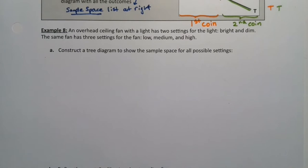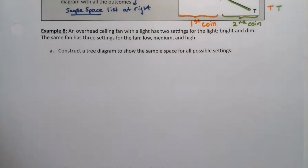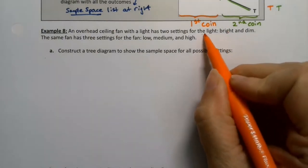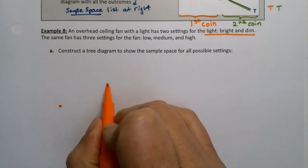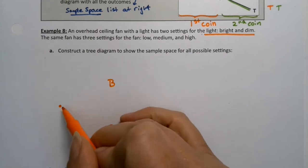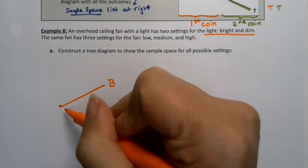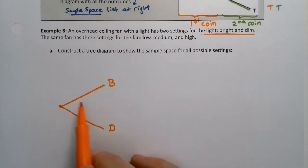So we have an overhead ceiling fan with a light that has two settings for the light, bright and dim. And the same fan has three settings for the fan: low, medium, and high. Construct a tree diagram to show the sample space for all possible settings. Okay. So we'll start off with the light portion. I'll do it in orange since it's bright and dim. So you start here over on the left. And I actually like to kind of write B and D vertically aligned. And then I go back and make the little V shape. The vertical alignment piece is important. So there's bright and dim. This is the light.